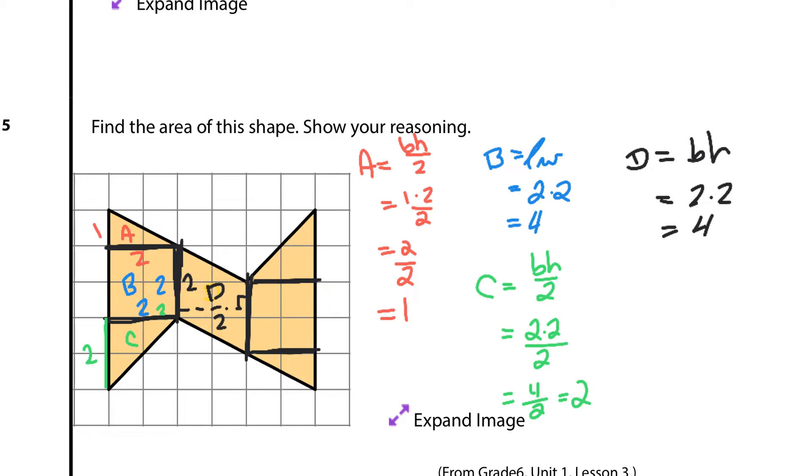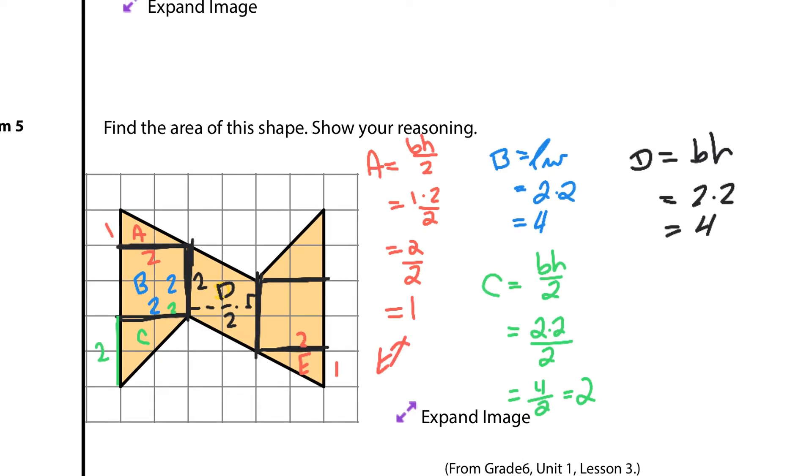Well, what about E? That bottom triangle, it's one by two again. Wait a minute. I already did a one by two triangle. Here in A. So, area of E is also one.